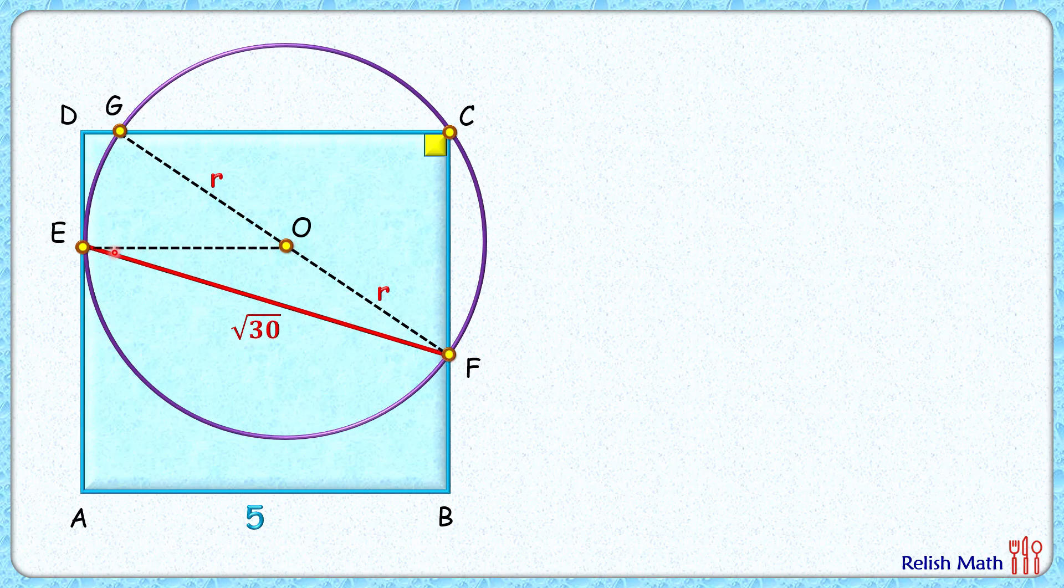But point E is the point of tangency, and we know by theorem the radius is perpendicular to the tangent. Thus this angle E is 90 degrees. Let's extend EO to meet the side at point H. Now DA and BC are sides of the square, thus parallel to each other.